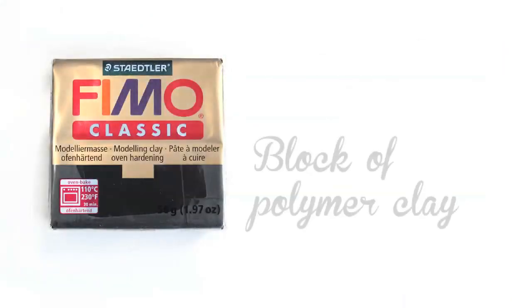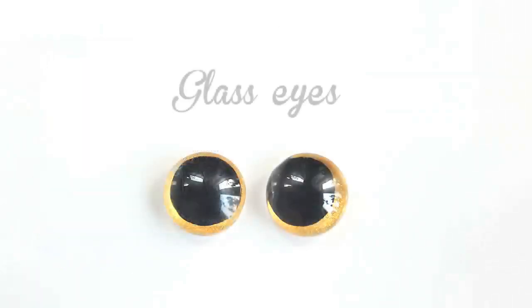We will also need one block of polymer clay in color black. I already pre-made the eyes and if you want to learn how to make your own glass eyes please click on the link below. I made a video about it before. These particular eyes are made in golden shade and are approximately 6mm in diameter.